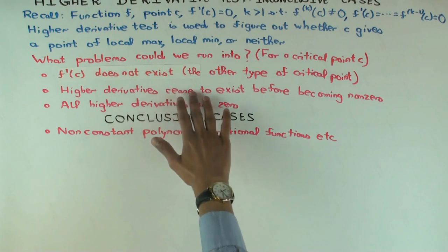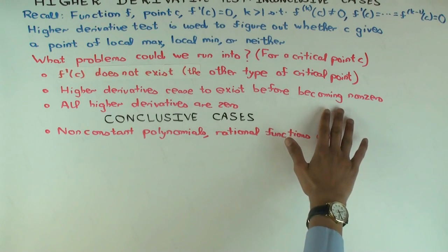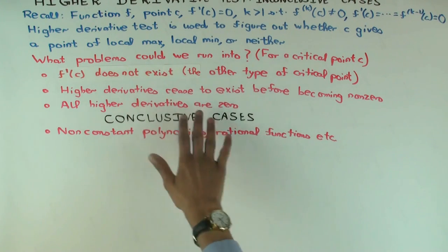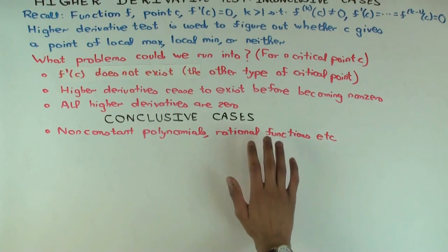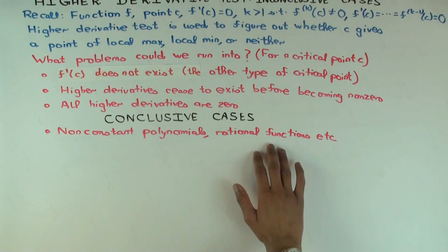The second problem: higher derivatives cease to exist before becoming non-zero. Well, actually, all the higher derivatives do exist for polynomials. For rational functions also, all the higher derivatives do exist wherever the function is defined.